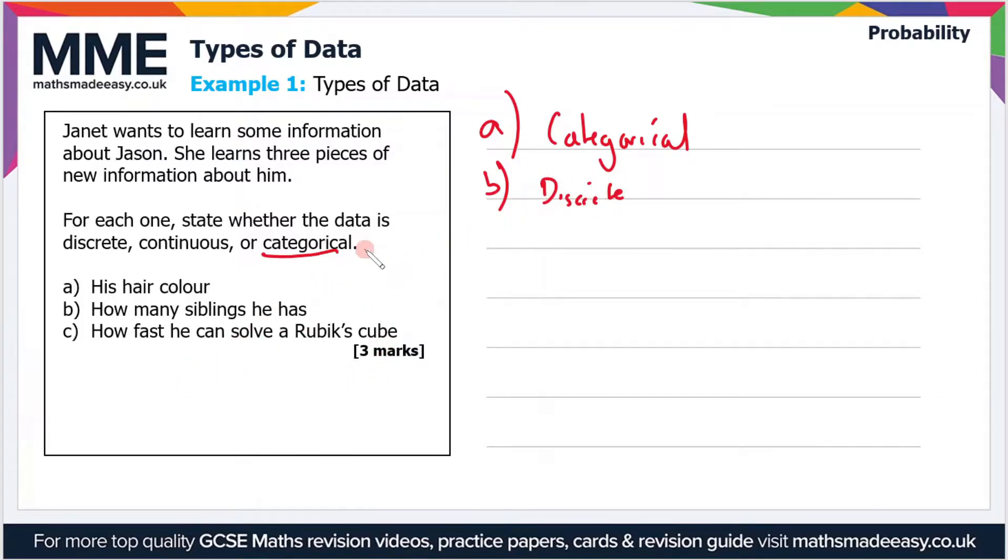And then finally, how fast he can solve a Rubik's cube. Why on earth she wants to know that is beyond me, but it's numerical data. And again, is it discrete or is it continuous? Well, it could take any time for him to solve a Rubik's cube. It could take him 10 seconds, it could take him an hour, he might never be able to do it, so it's continuous.